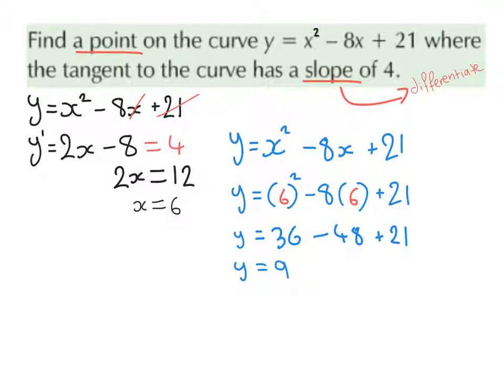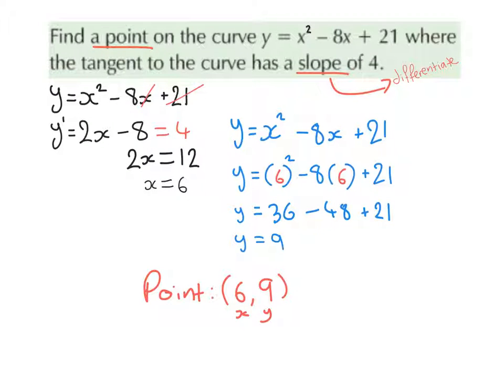Now, again, we are asked to find a point on the curve, so we put our x value together with our y value to get our coordinate. So the point on the curve, y equals x squared minus 8x plus 21, where the tangent to the curve has a slope of 4, is going to be the point (6, 9).